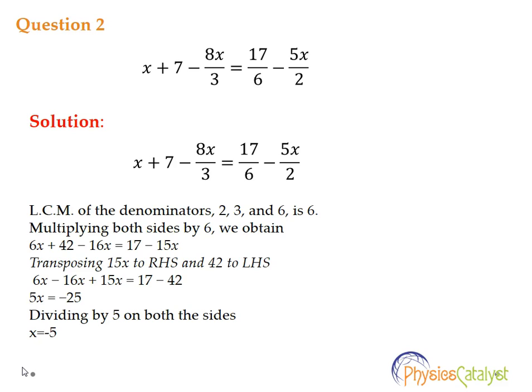We get 6x plus 42 minus 16x equals 17 minus 15x. Now we need to get the same terms on the similar side. So transposing 15x to the right hand side and 42 to the left hand side we get 6x minus 16x plus 17x is equal to 17 minus 42.